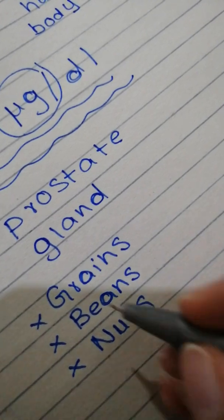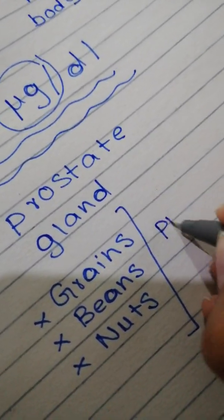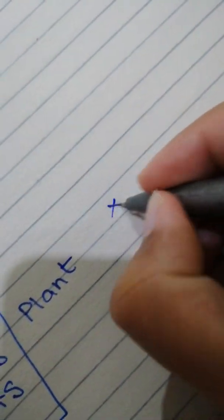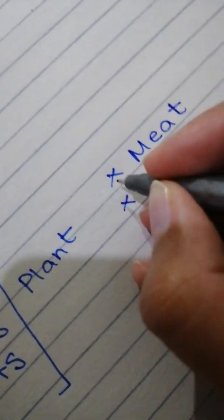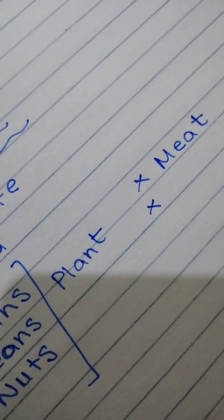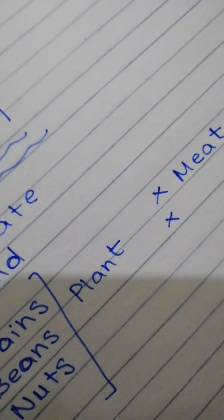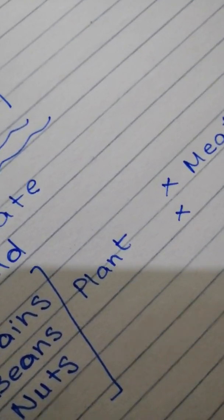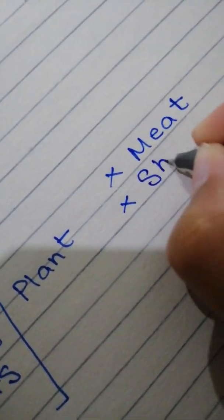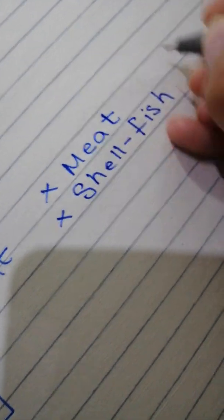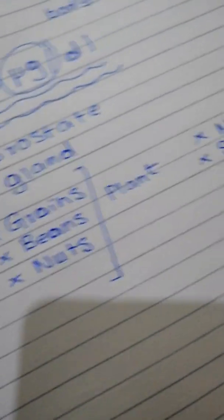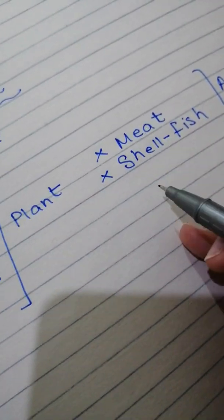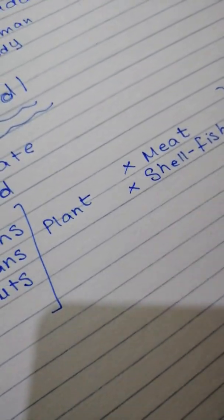If you talk about animal sources, we have meat and shellfish. These are the animal sources, and animal sources tend to be absorbed better. There is better absorption of zinc from animal sources such as meat and shellfish.